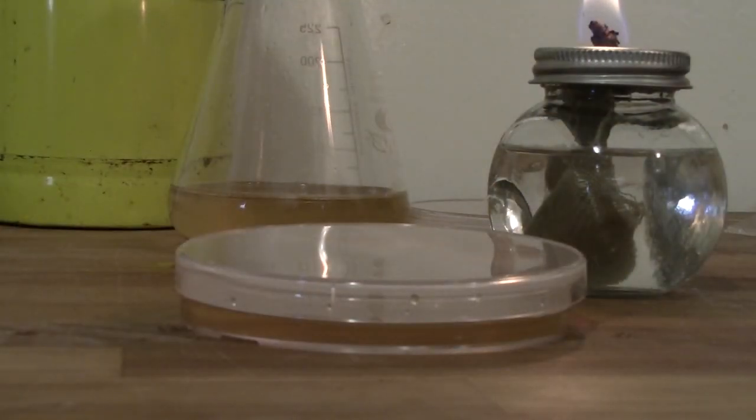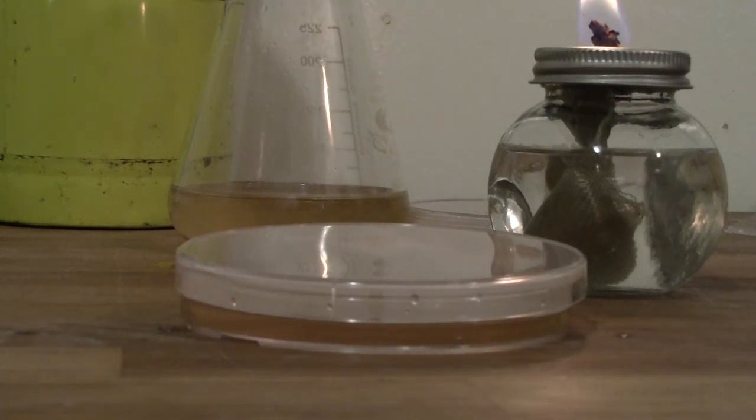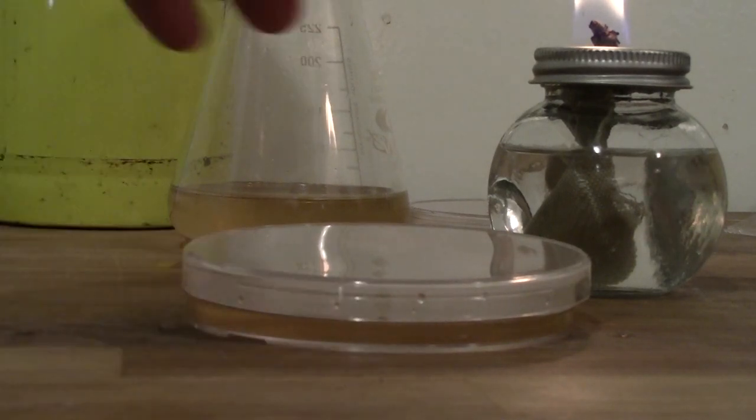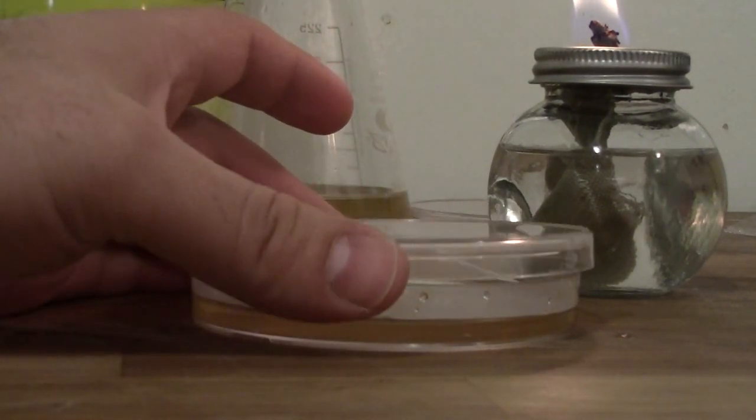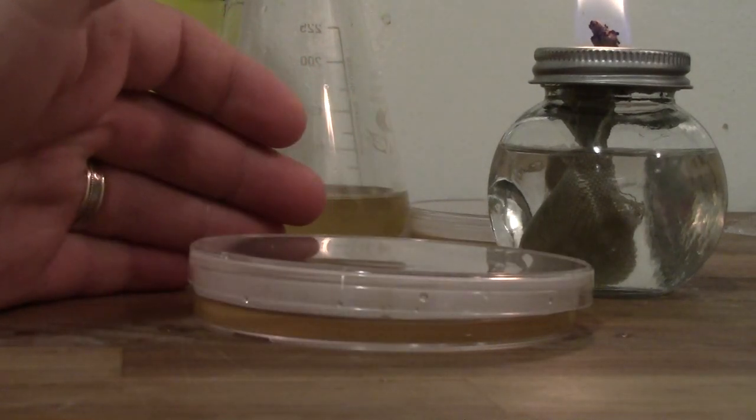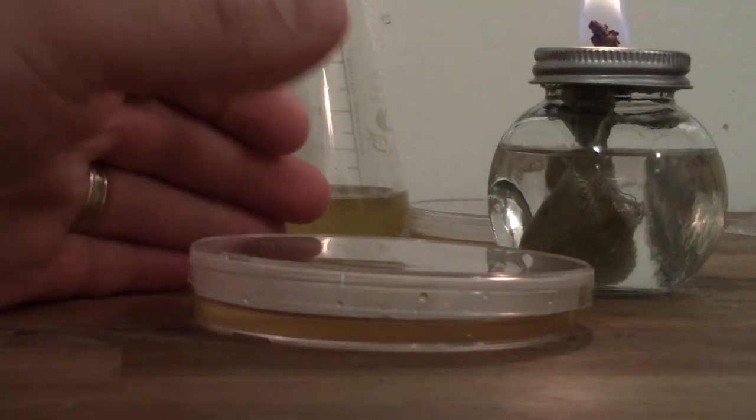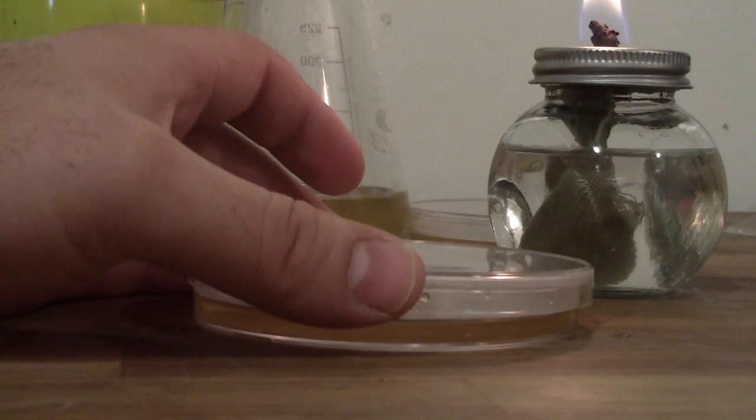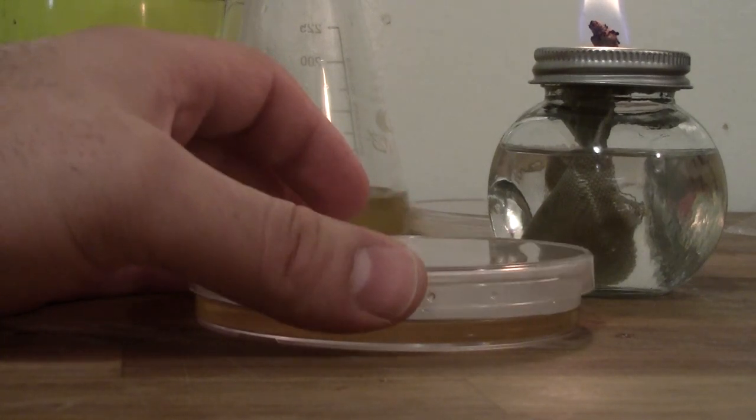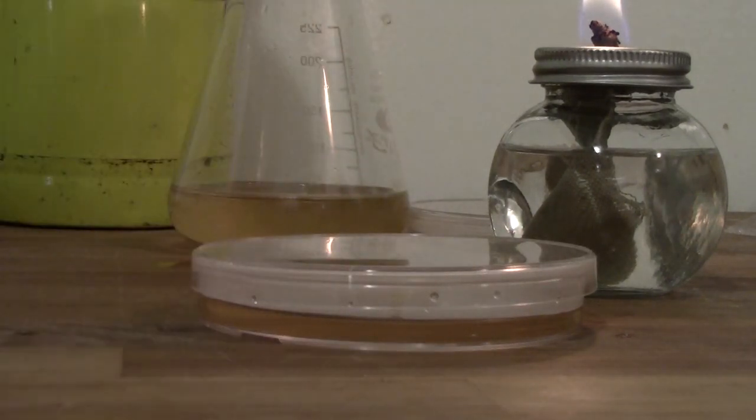So how do we know if we've poured enough media into the plate? And this actually isn't as hard to figure out as you might expect. If you look here, you can kind of see that the top of the media falls roughly along where the edge of that plate is. And that's a good sign you have the right amount. It's 25 to 30 mils, but rather than measuring that exactly, you can just pour until the top of the gel is roughly even with the bottom of the lid.